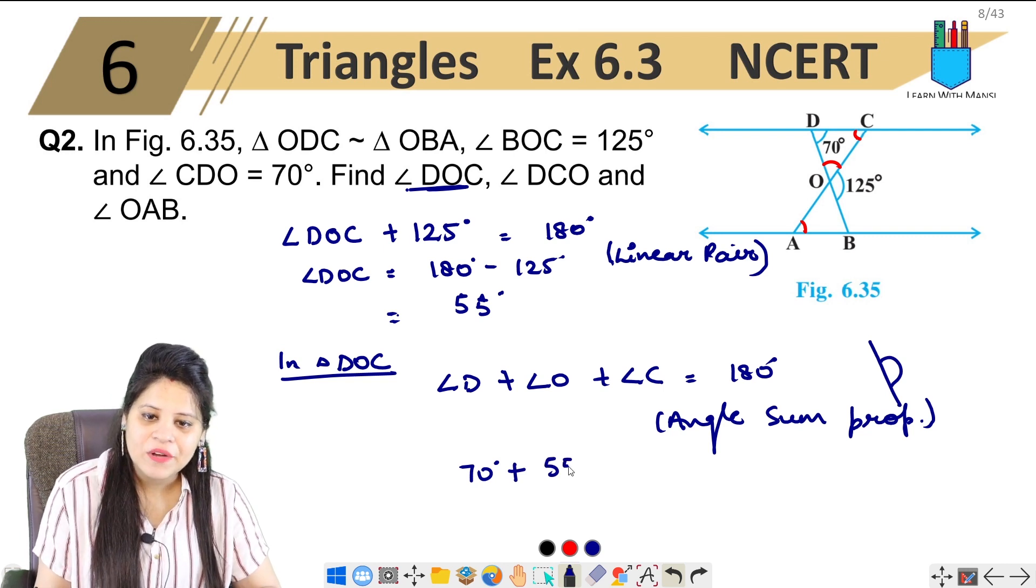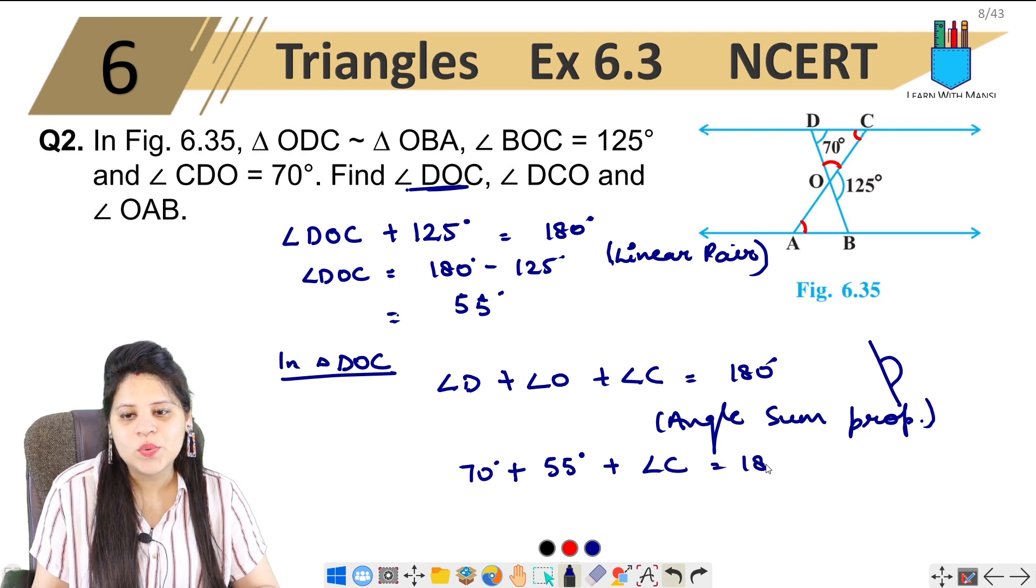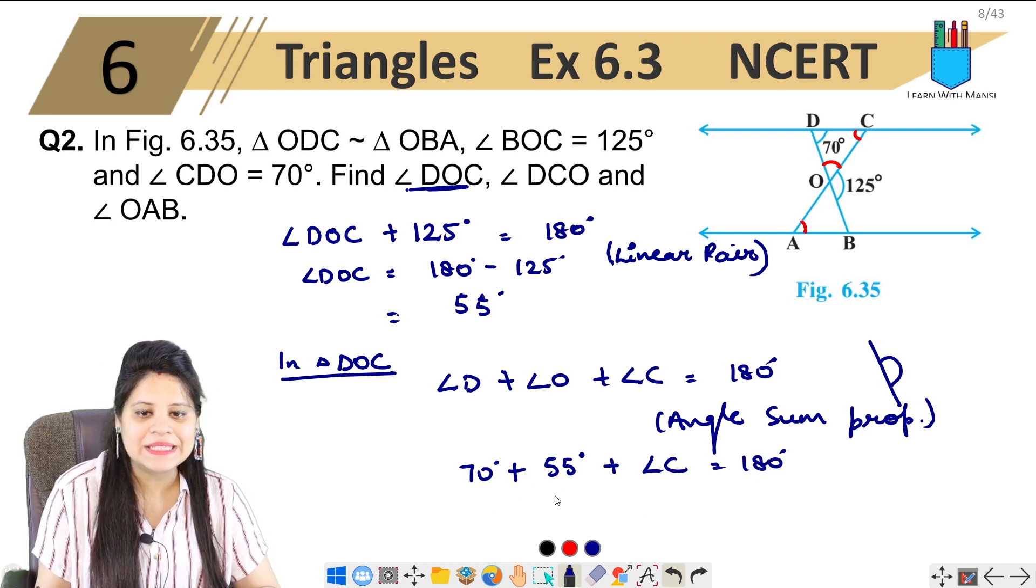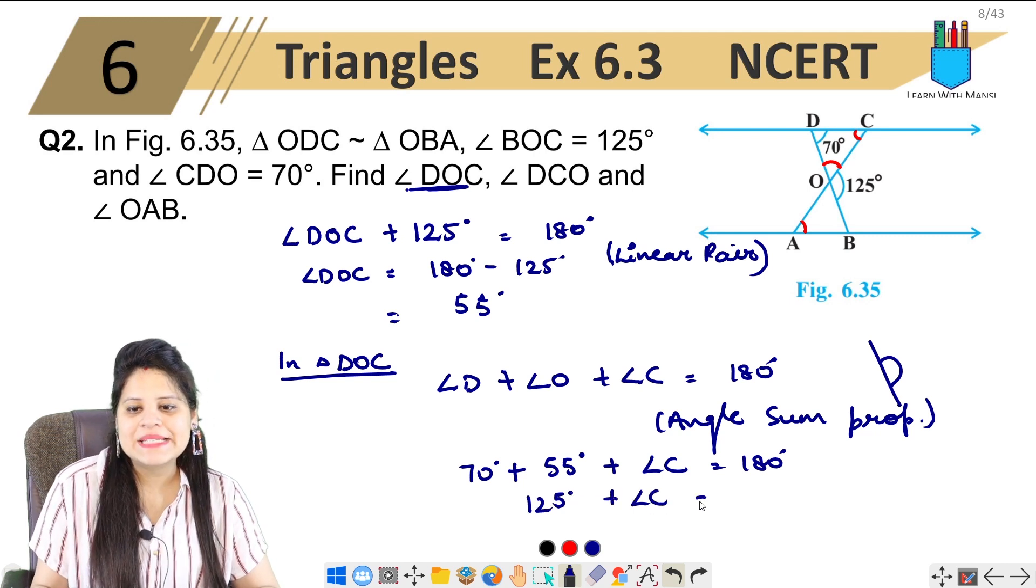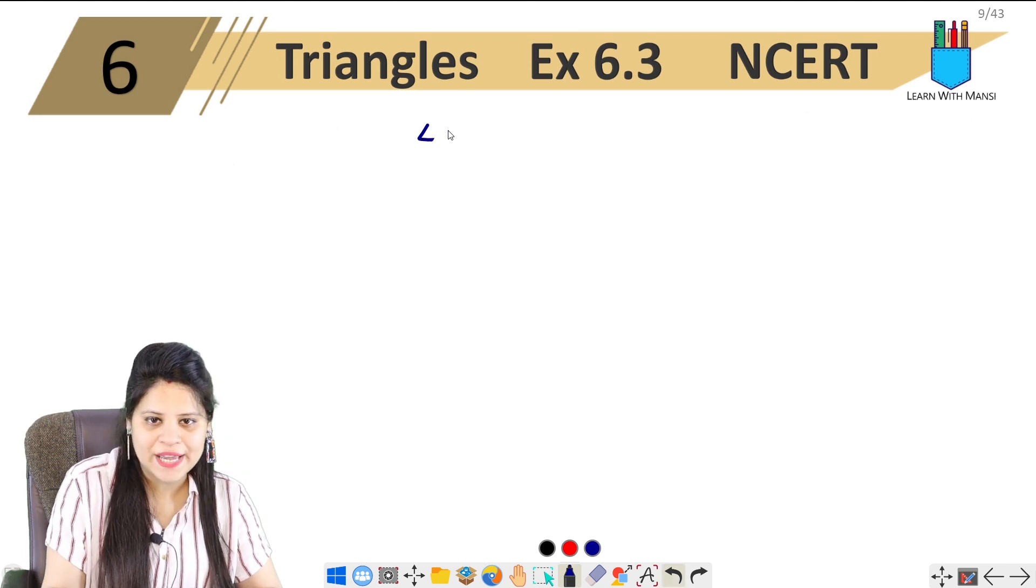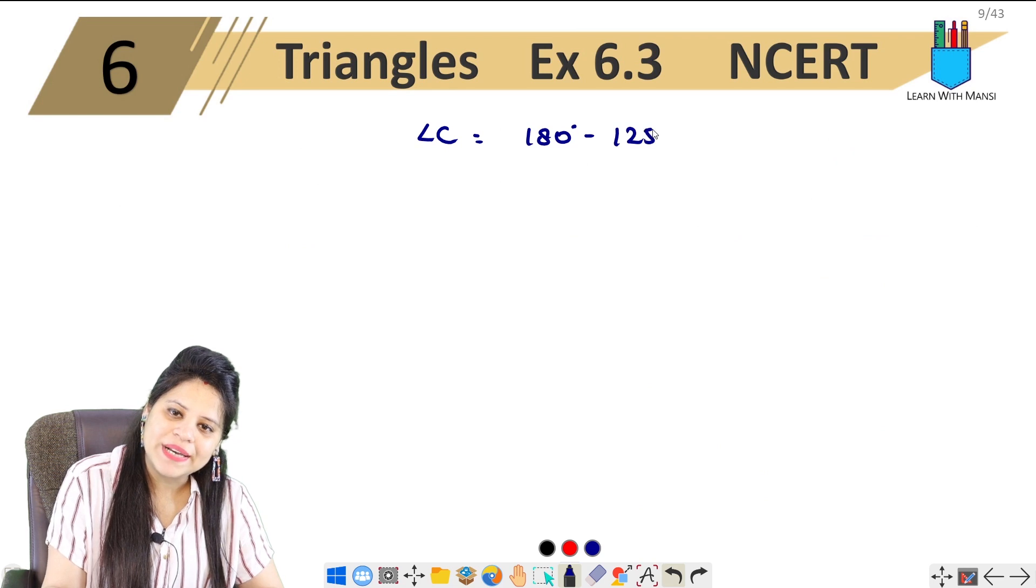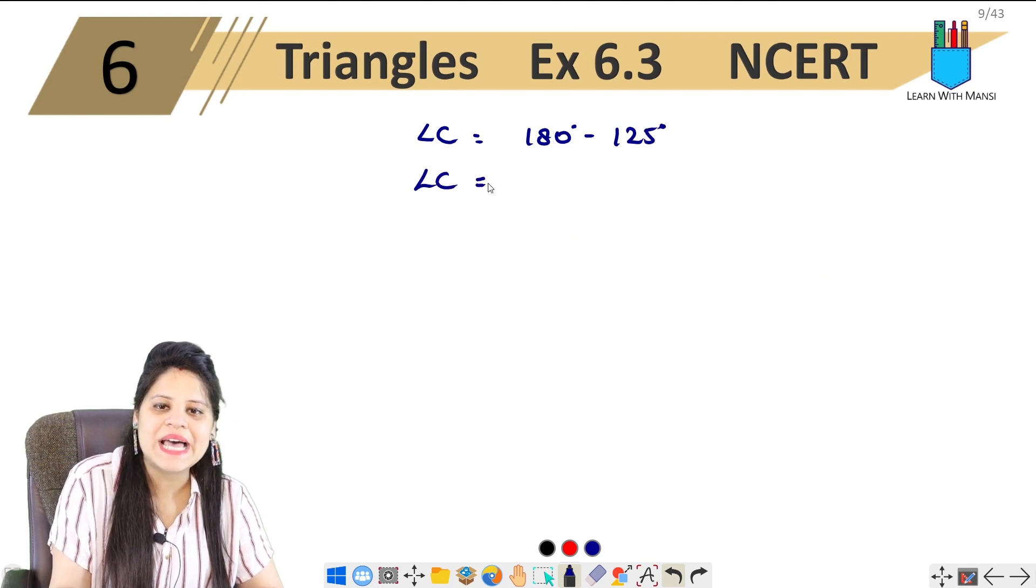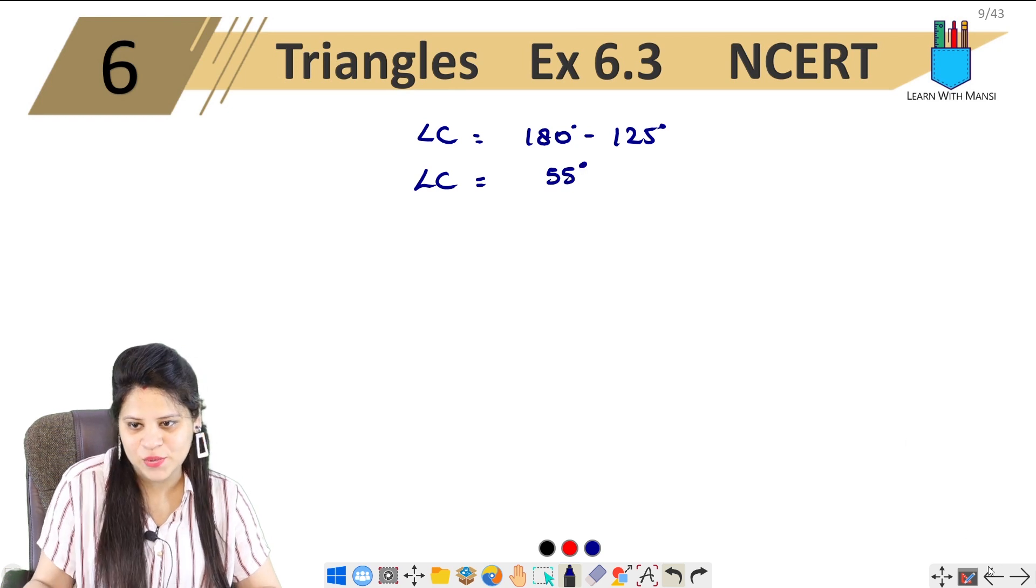Now we have 70 degrees plus 55 degrees plus angle C equals 180 degrees. 70 plus 55 is 125, so angle C equals 180 degrees minus 125 degrees, which means angle C equals 55 degrees.